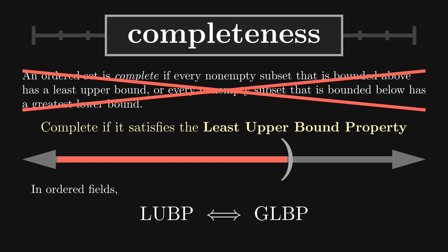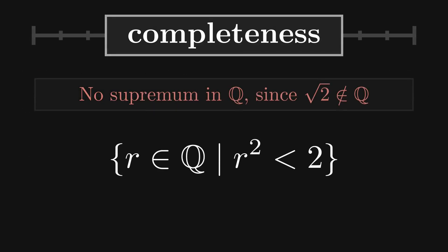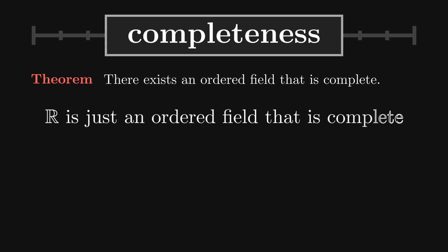Notice that the rationals do not have the completeness property. A construction of R is essentially a proof that there exists an ordered field that is complete.